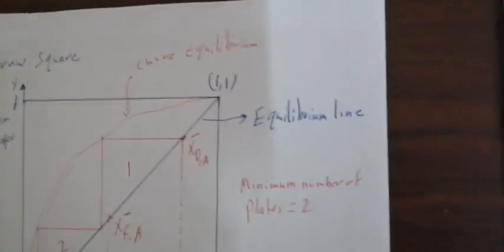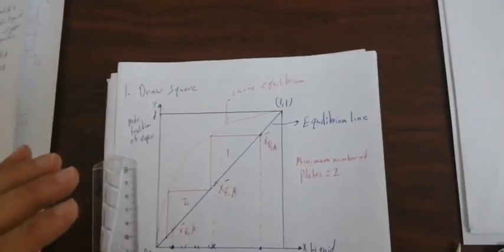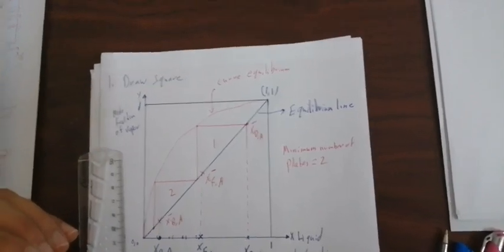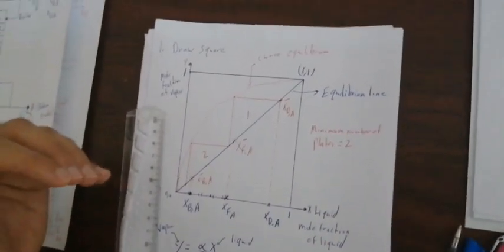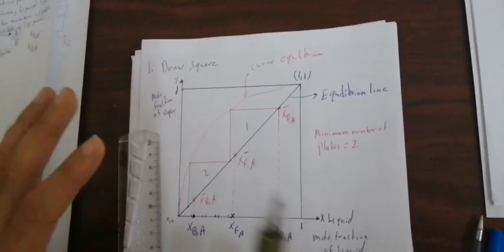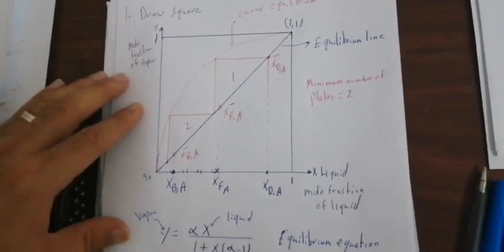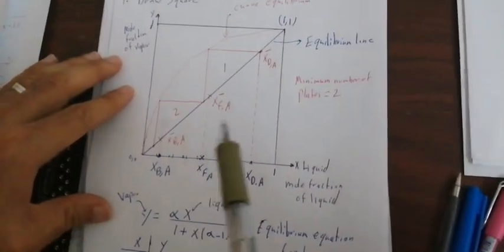Each triangle equals one plate, so for example if we get 2 triangles, that means 2 plates — this is the minimum number of plates. The minimum number of plates is used in design for situations where resources are limited, as a full high-quality distillation column may be too expensive. So we use the McCabe-Thiele method to calculate the number of plates using the minimum number of plates. Thank you very much for listening. Next, we will go on to calculate the maximum.